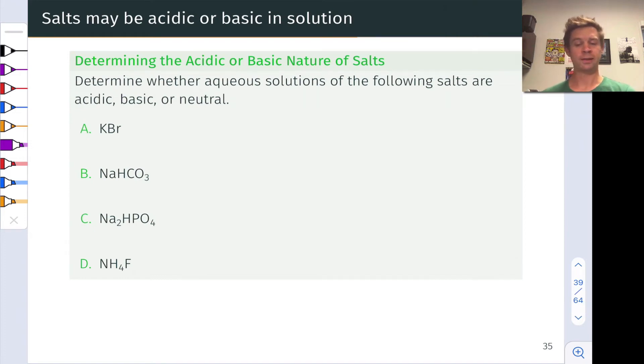In this problem we're asked to determine qualitatively whether aqueous solutions of the following salts are acidic, basic, or neutral. What we're going to do for each salt is look at the cation and anion and think about them directly as an acid or base, or consider the conjugate base or acid if we're familiar with it to get a sense of the original acid or base strength.